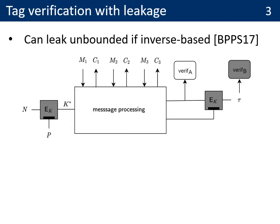I will start with the flaw issue. I will recall the two main solutions to perform tag verification with leakage. The first option is to work in the direct sense, to recompute the tag T, and to perform verification process B of the figure. In this case, it is very important that the verification is protected against DPA. Otherwise, an adversary can use the leakage about T in order to mount forgeries.